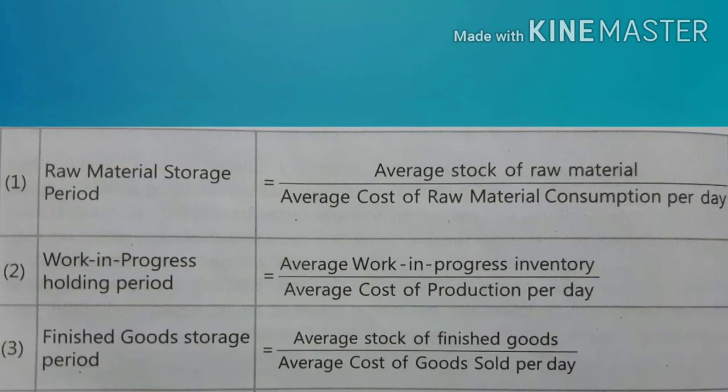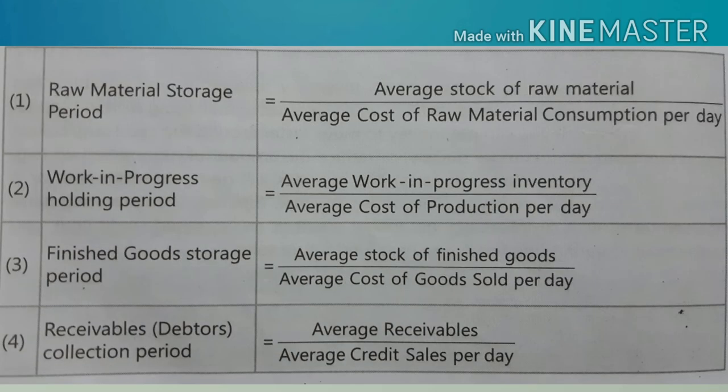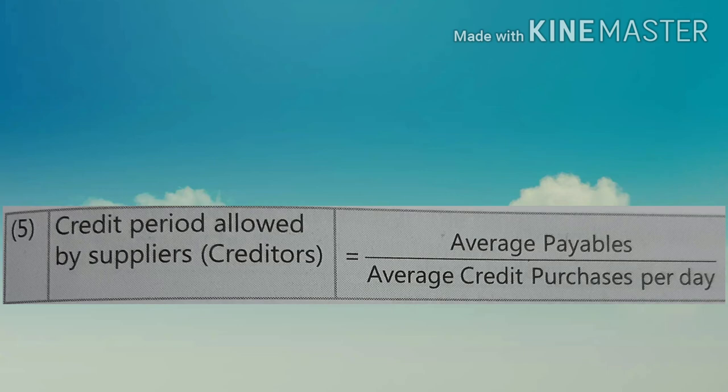For finished goods: today's finished goods will only be sold after the existing finished goods are sold. The waiting time = average stock of finished goods ÷ average cost of goods sold per day. The debtor collection period indicates how many days' sales are outstanding — calculated as average receivables ÷ average credit sales per day. The credit period allowed by suppliers = average payables ÷ average credit purchases per day, indicating how many days' purchases are outstanding for payment.